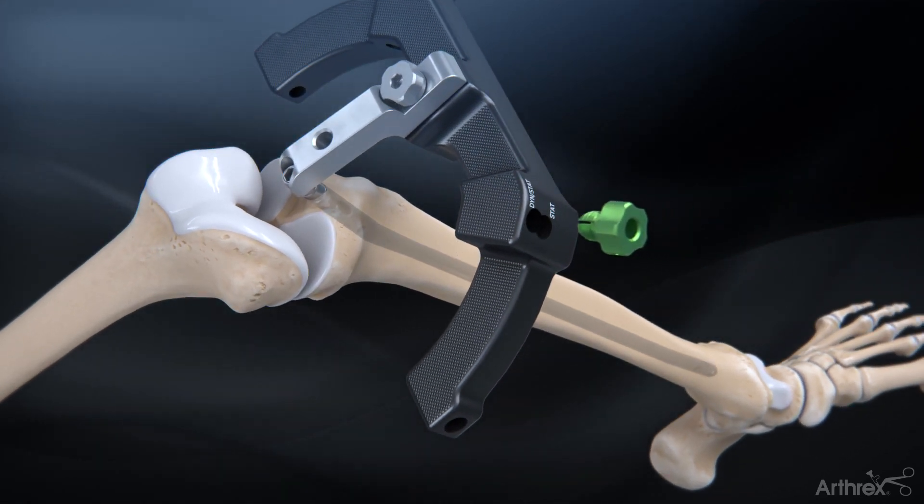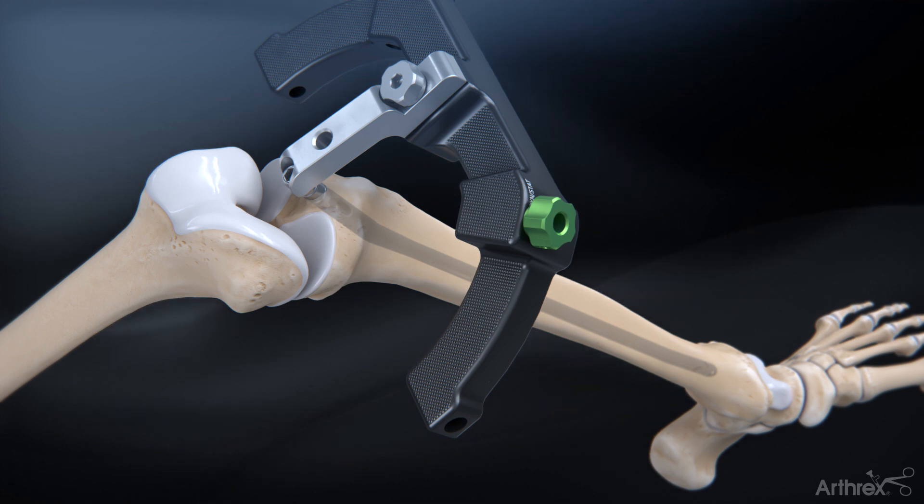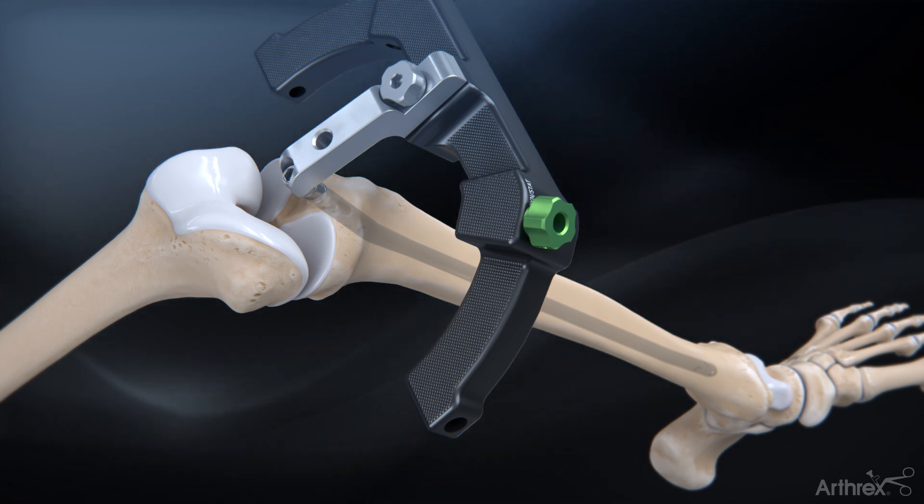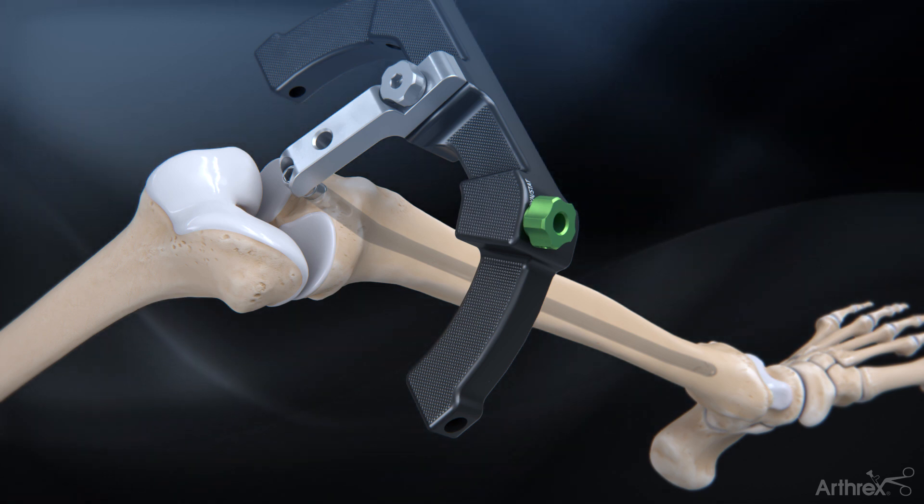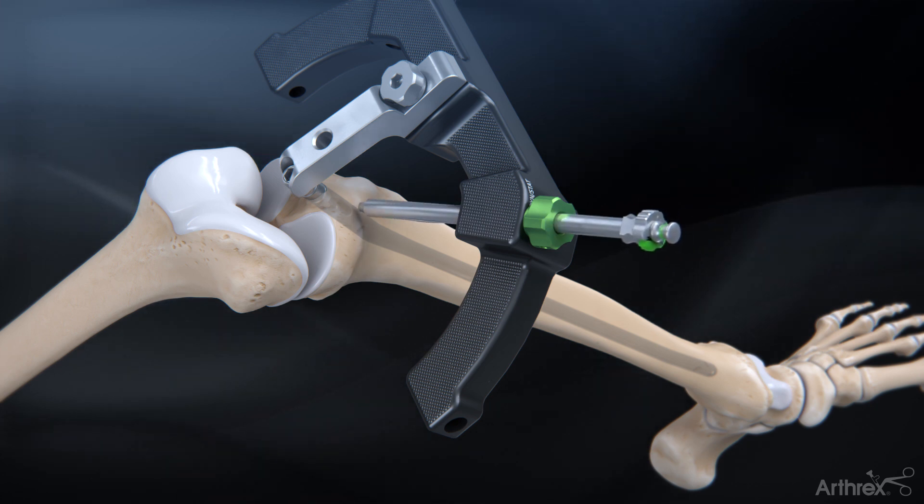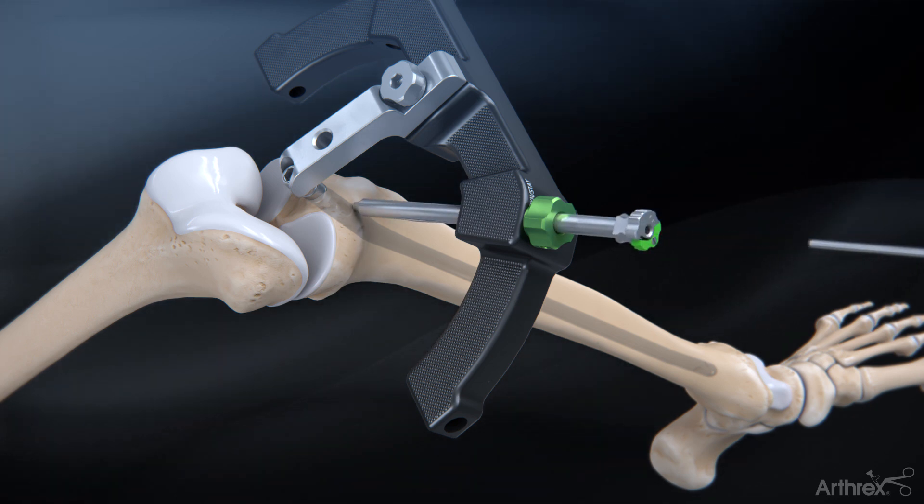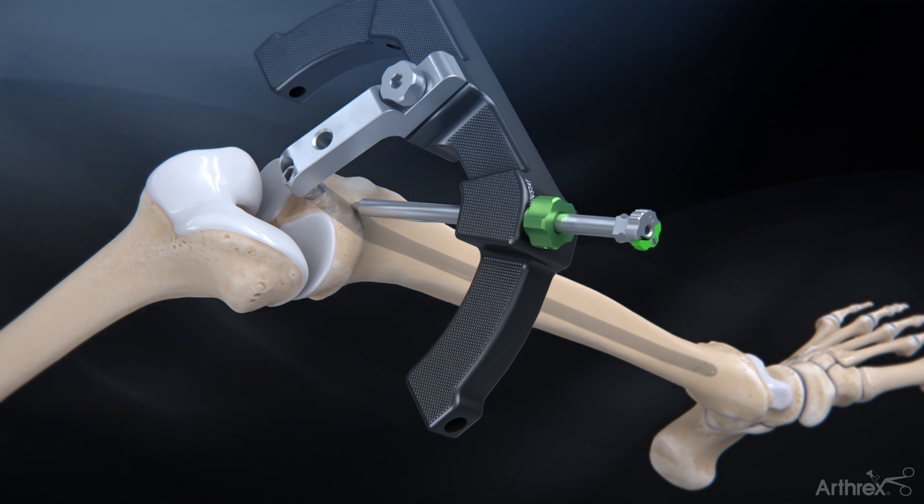Thread the green locking collar into the locking hole on the targeting module. When compression is desired, be sure to use the hole marked dynamic. Insert the assembled drill sheath, drill guide and obturator into the targeting guide until it rests on the outer cortex of the tibia.